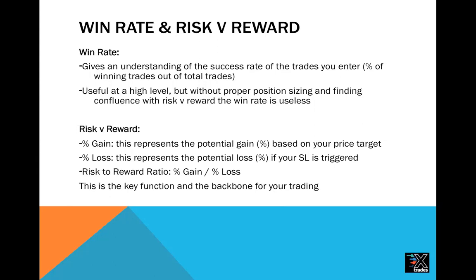With risk versus reward at a high level, it takes the percent gain that you expect compared to the potential percent loss if your stop loss was triggered. You'd look at your price target for the gain side, and your percent loss would be if your stop loss gets triggered. The risk-to-reward ratio is that percent gain divided by the percent loss. For example, if you think a stock's going to break out and make a 7% move and your stop loss is 1% below entry, that would be essentially a seven-to-one risk-to-reward trade, which is obviously a really strong trade.